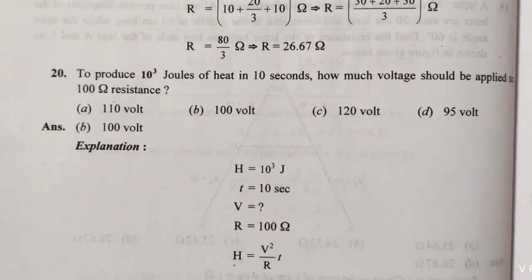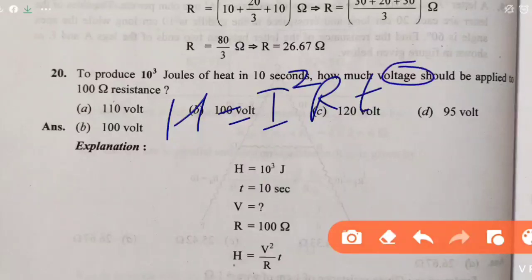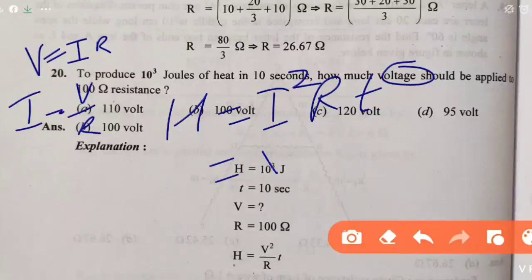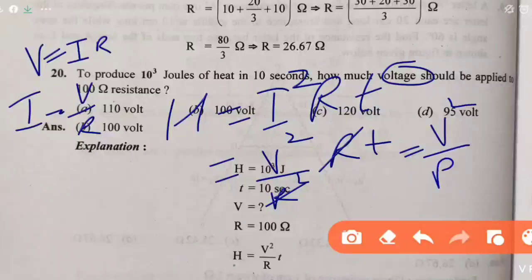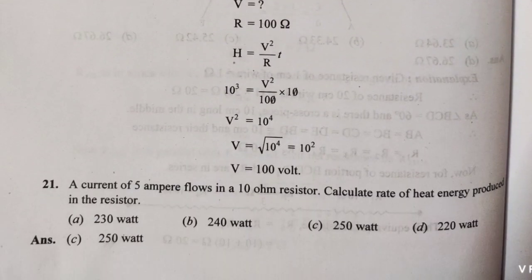Question 20: To produce 10³ joules of heat in 10 seconds, how much voltage should be applied? Resistance is given. Heat formula H = I²Rt. Since current is not given directly, substitute I = V/R, giving H = V²t/R. Rearranging: V² = HR/t. Put in values and solve for V.